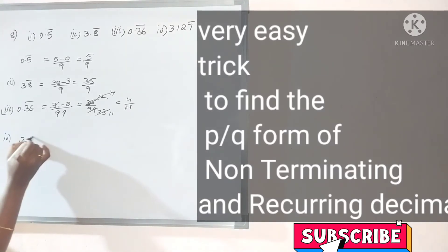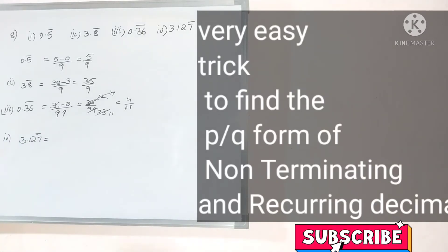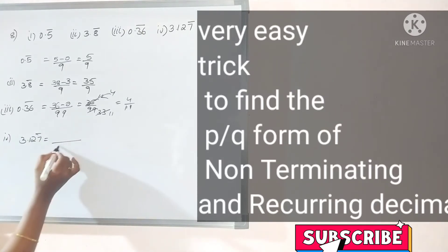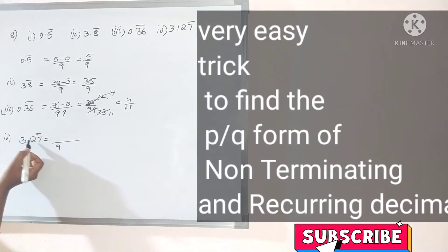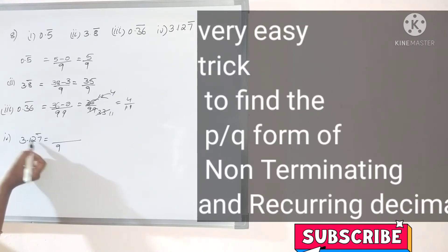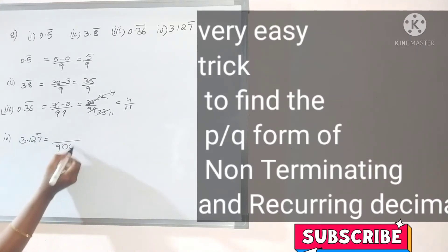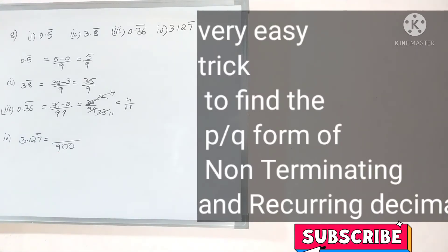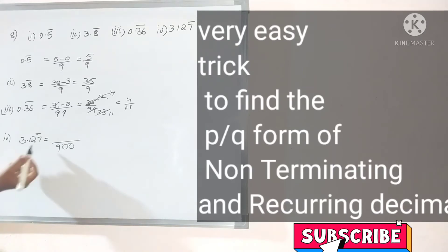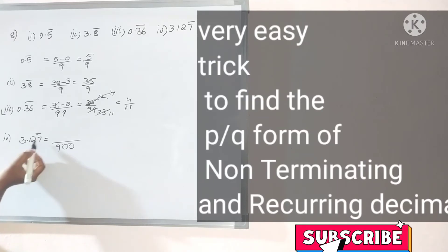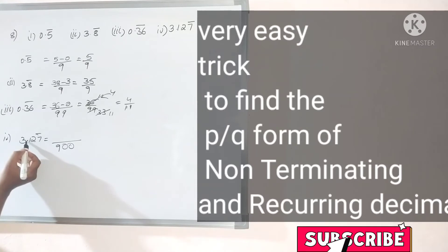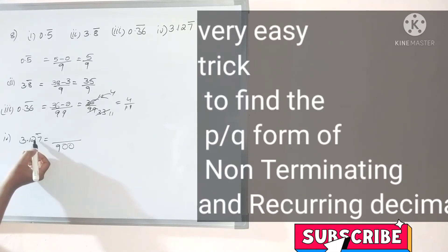Next, our last example: 3.127 bar. How many numbers are repeating? One. So write one 9. How many digits are lying to the left of that repeating number after the decimal point? Two digits. So put two zeros next to the 9, giving 900 in the denominator. One number is repeating so I wrote 9, and two digits are before the repeating part after the decimal point, so I put two zeros.